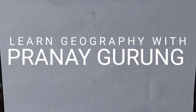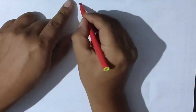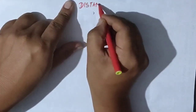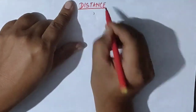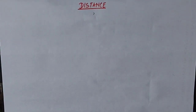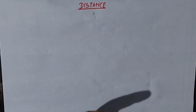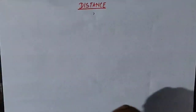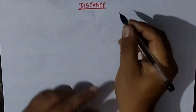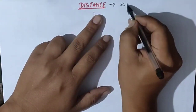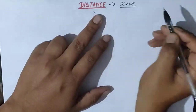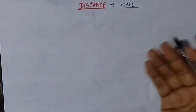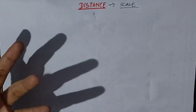Welcome students to my YouTube channel. Today the topic we are going to cover from the topographical map is distance. In this video, I'm going to teach you how we can calculate the distance between two different places on the ground with the help of a map. Before we move on to distance, we need to understand scale, because without a scale, a map is just a rough drawing — just a sketch.